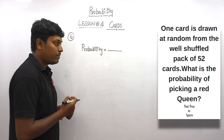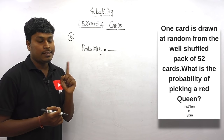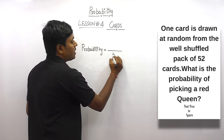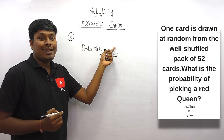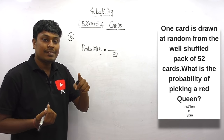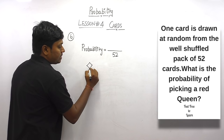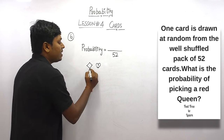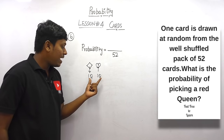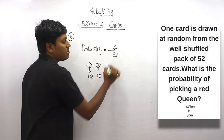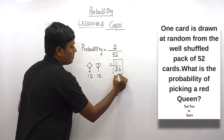Question number six: one card is drawn at random from a well-shuffled pack of 52 cards. What is the probability of picking a red queen? Total possibility is 52. The red shapes are diamond and heart, and each has one queen, so there are 2 red queens. Sum of observations is 2, divided by 52 = 1/26.